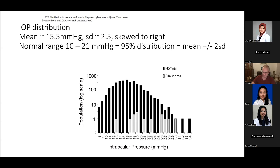What is the relative risk of getting glaucoma — that is, a visual field defect or optic disc damage — depending on baseline pressure? A famous meta-analysis by Sommer looked at the relative risk of developing glaucoma at four years following a pressure measurement. Assigning a relative risk of 1 at pressures less than 16 mmHg, the function is actually exponential — by the time you reach a pressure greater than 30, the risk of getting glaucoma has risen about 40-fold.